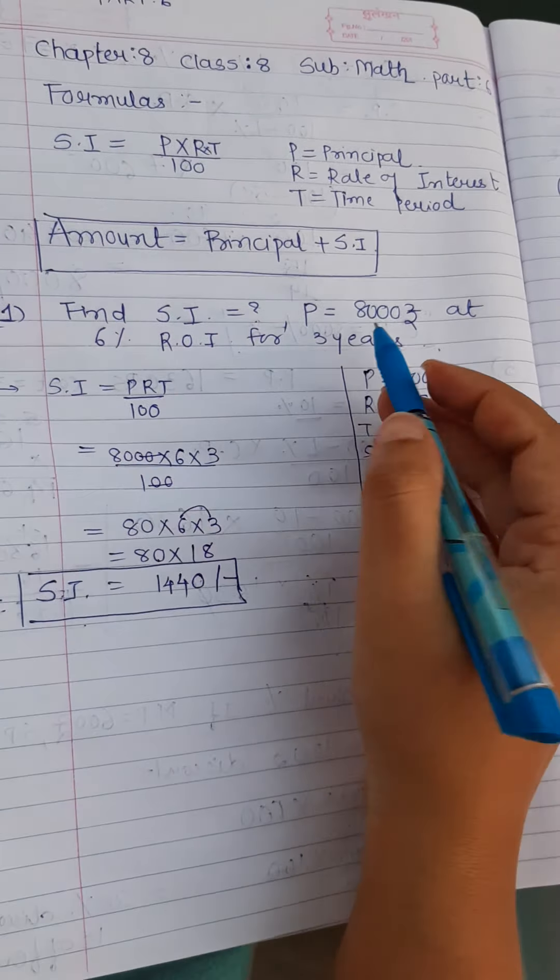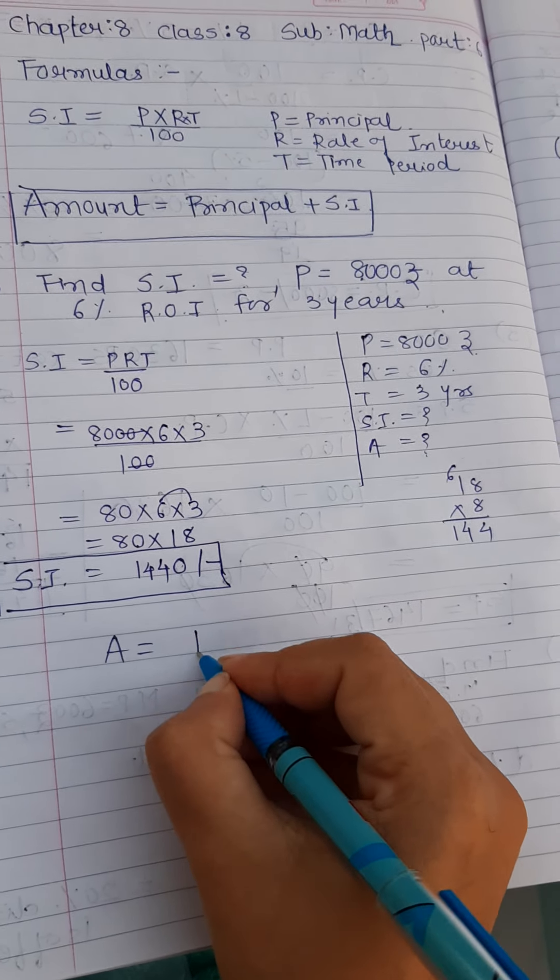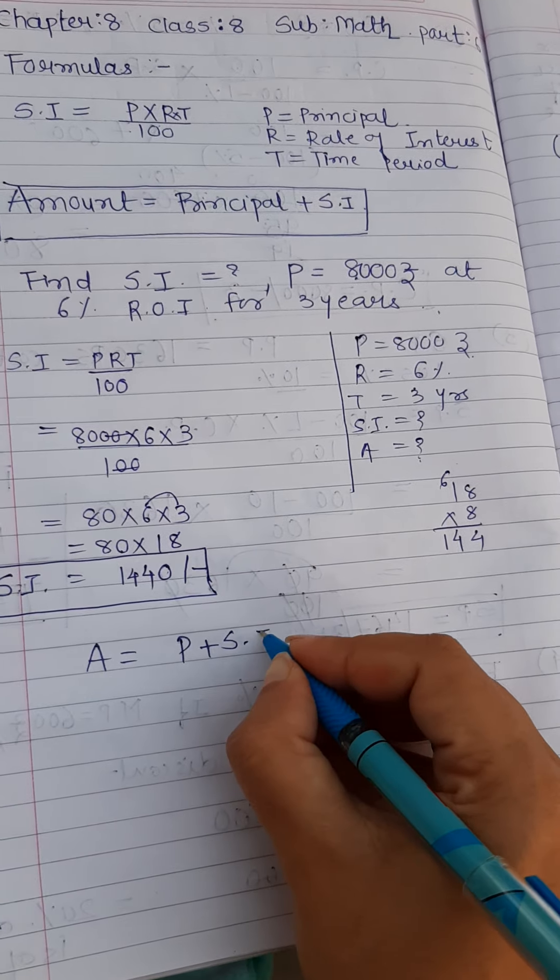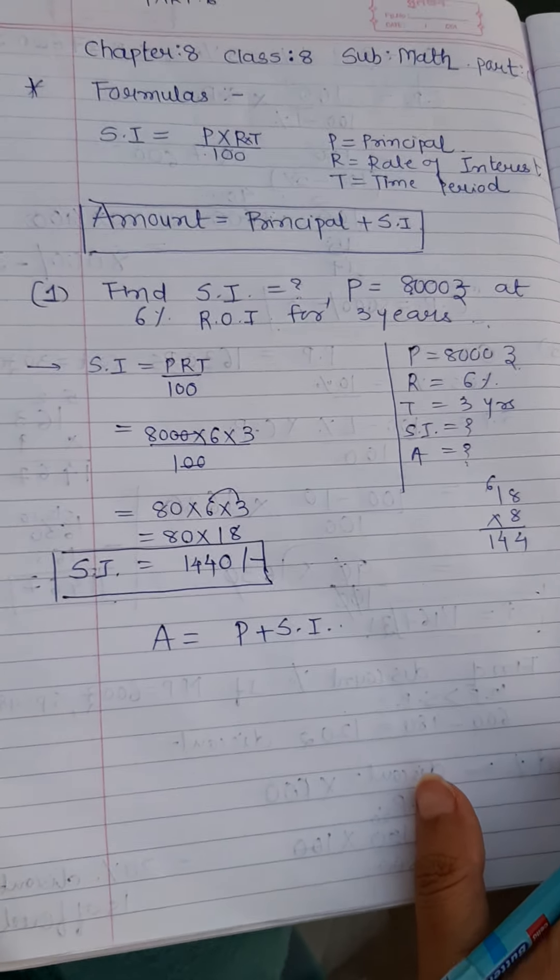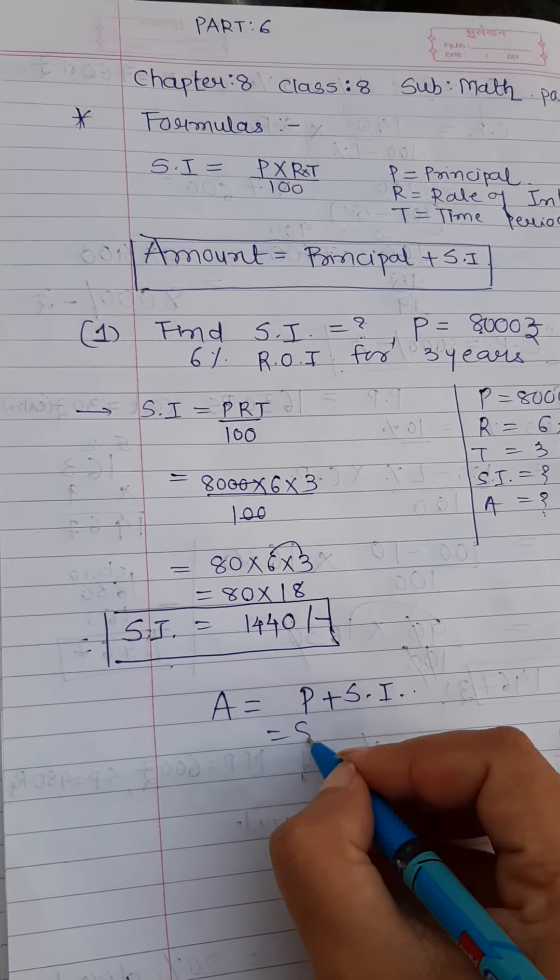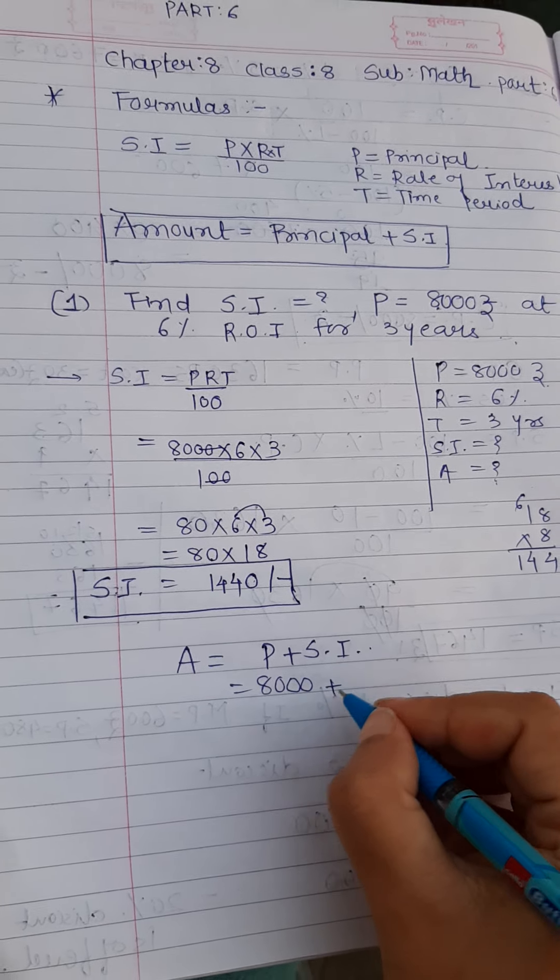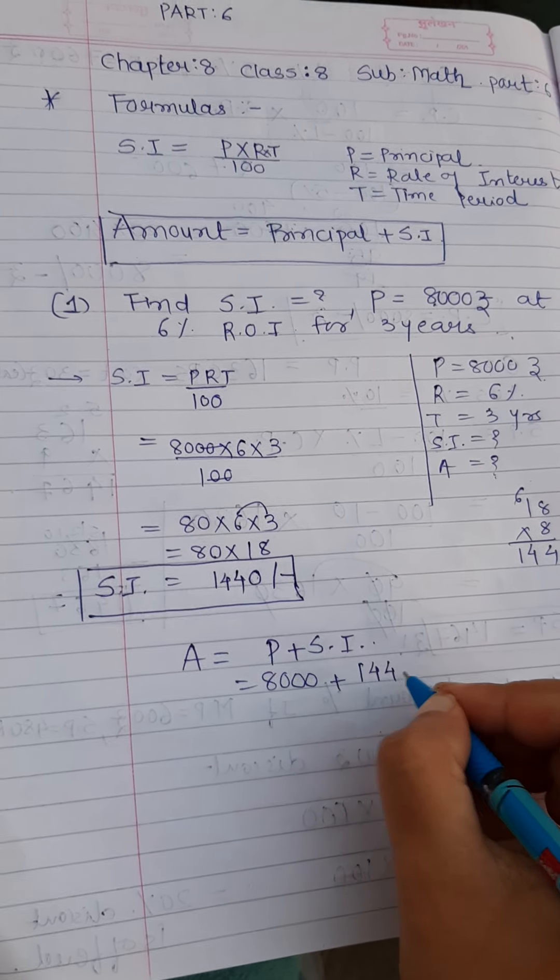So this is my simple interest that bank is going to offer me. But I have already deposited something. So my amount should be P plus SI. So what is P plus SI? What do you mean by P plus SI? That is principal plus simple interest is 1, 4, 4, 0.